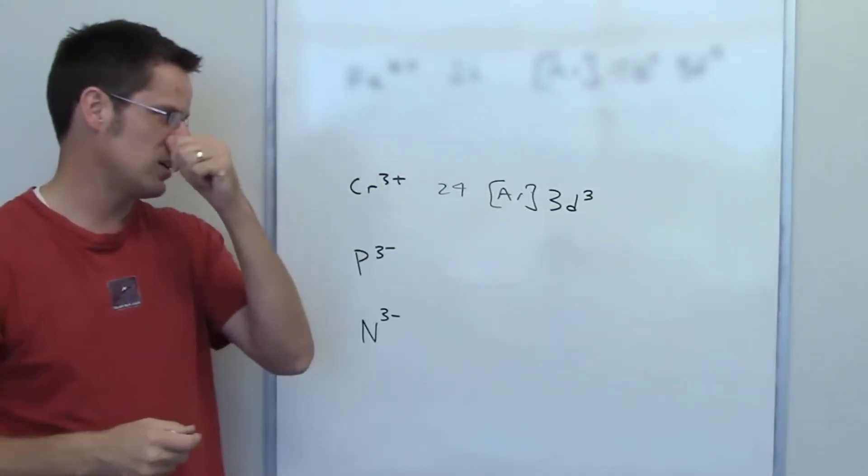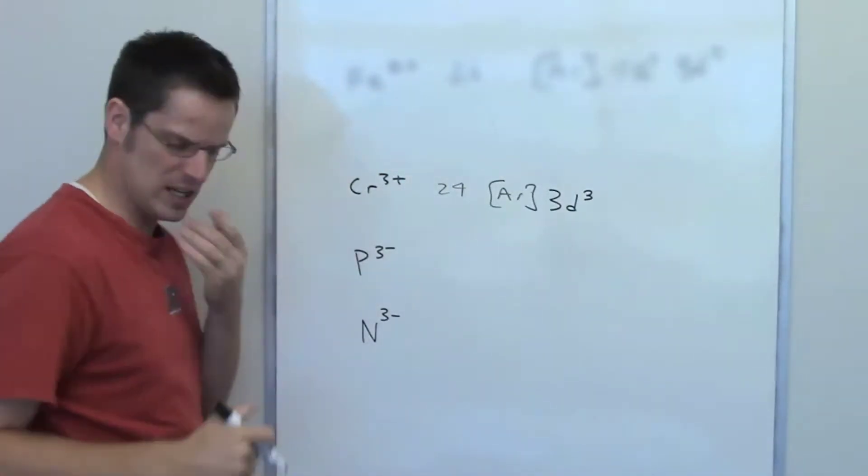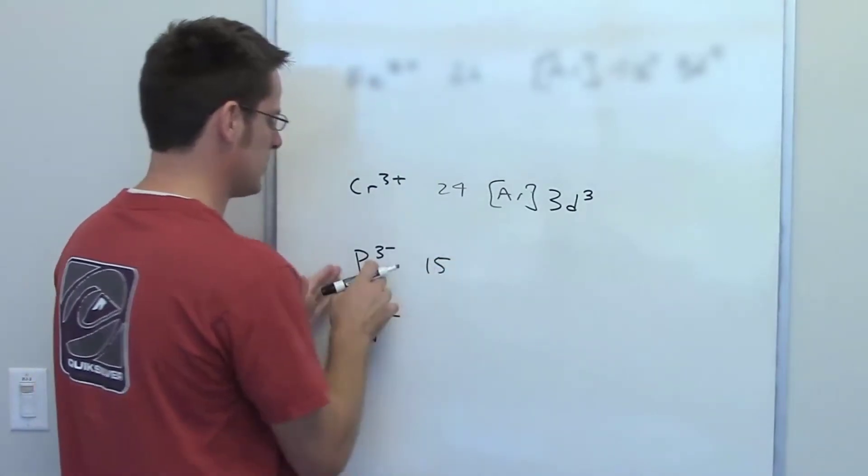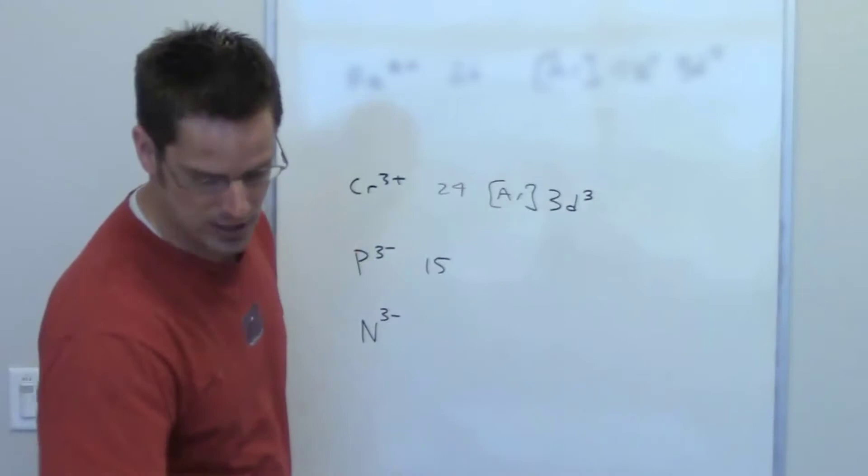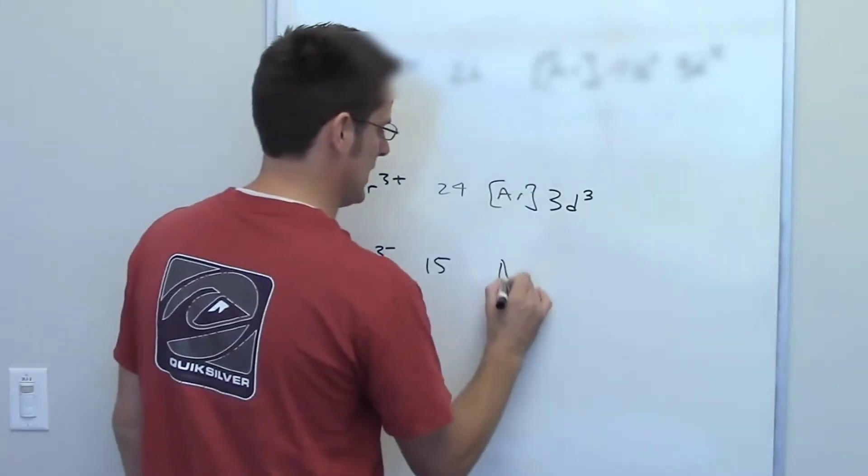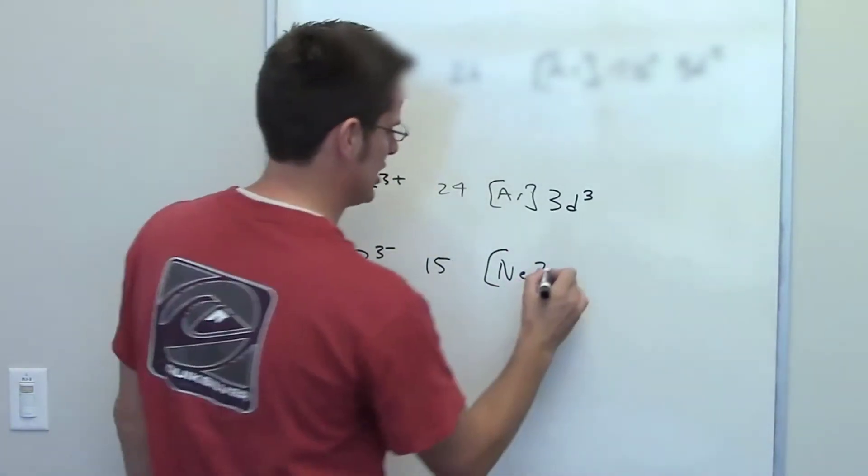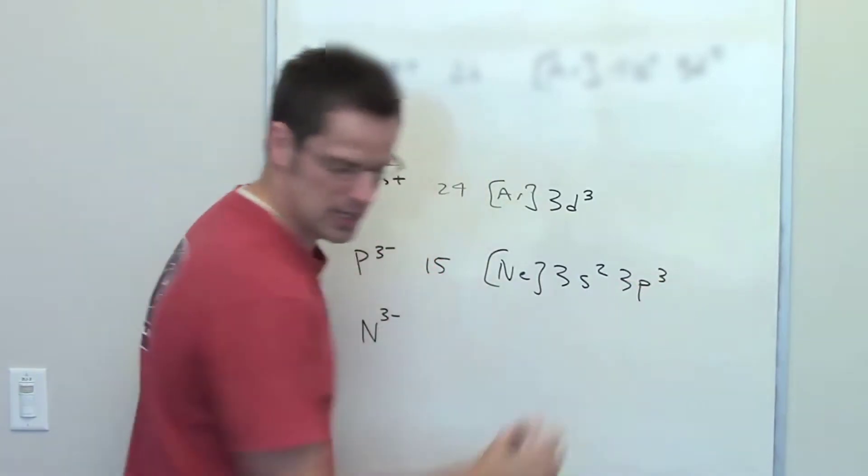That is going to be the electron configuration of chromium 3+. Let's move on then to phosphorus. Phosphorus is element 15 on the periodic table. Phosphorus, electron configuration condensed is normally that of neon. When it's neutral it's that of neon. Then 3s2, 3p3 I believe.